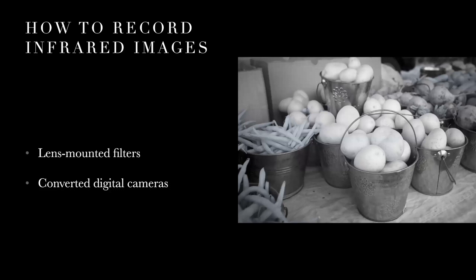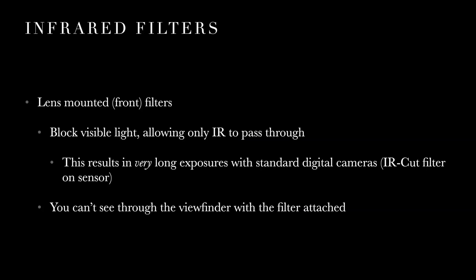So how do you shoot infrared and record infrared images? There are two ways to do it digitally — not counting infrared film. The first is to use a filter that blocks visible light, like a Hoya R72 infrared filter on your lens. The problem is that digital cameras have an infrared-blocking filter on the sensor itself, called the IR cut filter. That means not a lot of infrared wavelength will hit the sensor on an unconverted camera, so you'll face very long exposures.